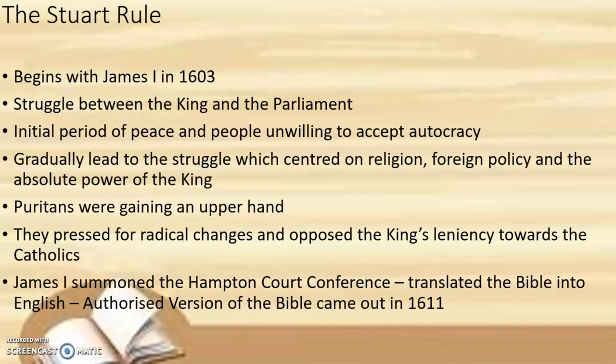The Stuart rule begins with the accession of James I in 1603 after the death of Queen Elizabeth. He was then the ruler of Scotland — James VI of Scotland — and on coming to England and ascending the throne became King James I of England. He was the nearest heir to the throne, being the son of Queen Mary, who was the daughter of Margaret, one of the daughters of Henry VII.